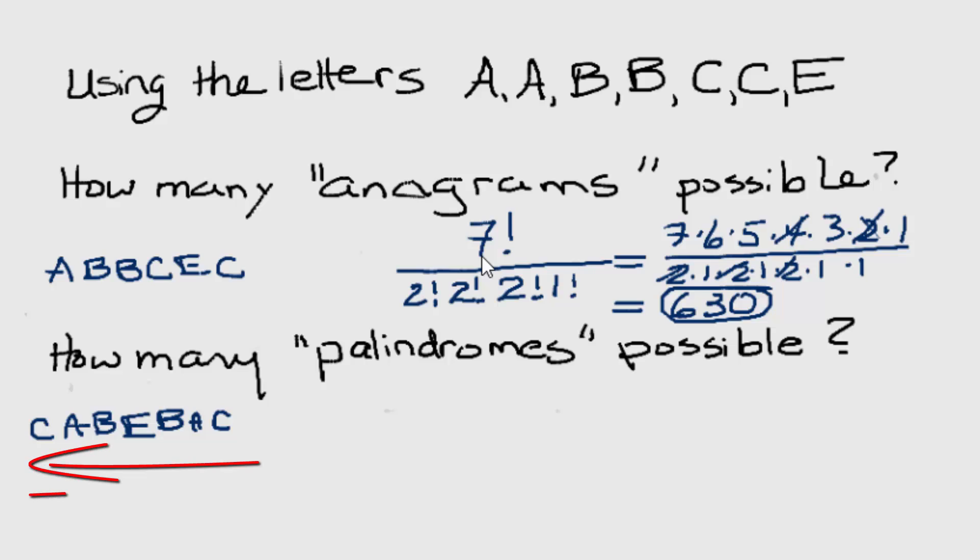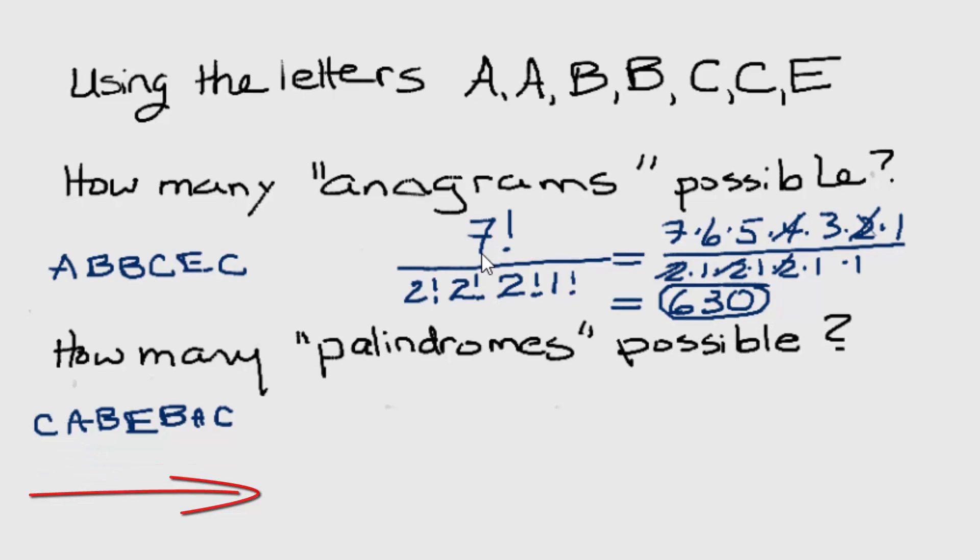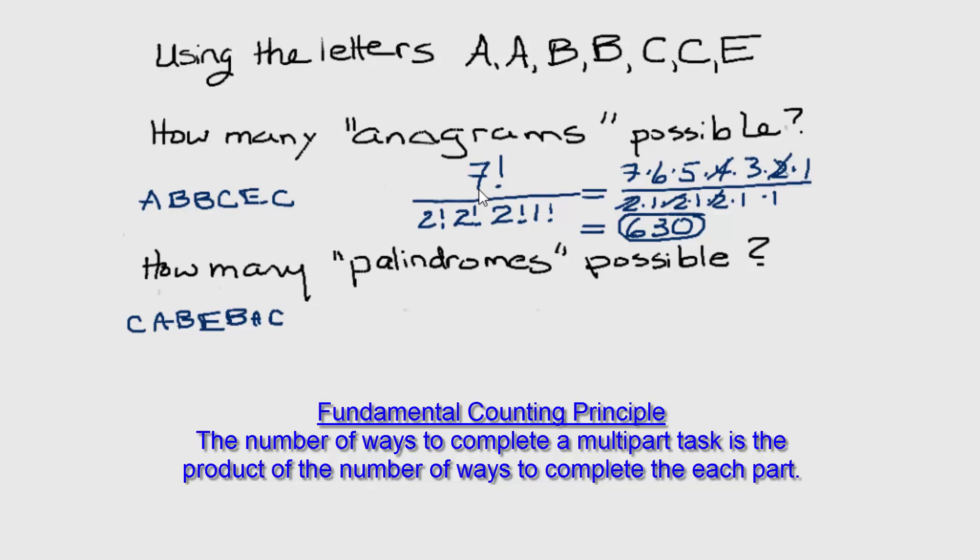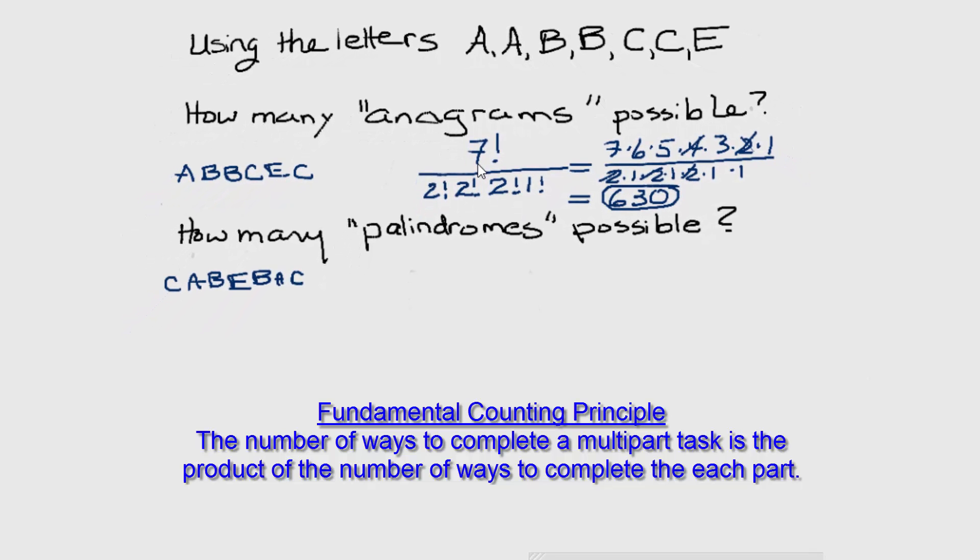But how do we count the total number of possible palindromes? One way is to use systematic listing, but another approach is to use the fundamental counting principle, which says that we can break the task down into parts, count the number of ways each part can occur, and multiply those together. In order to do this, I'm going to set up a little diagram.